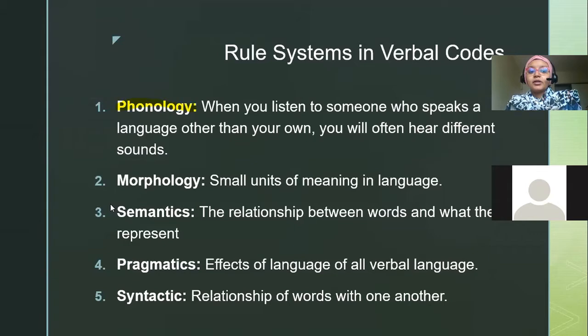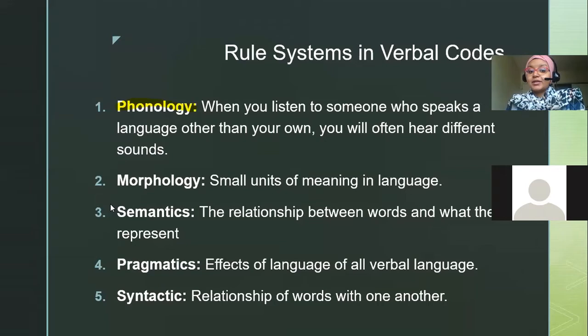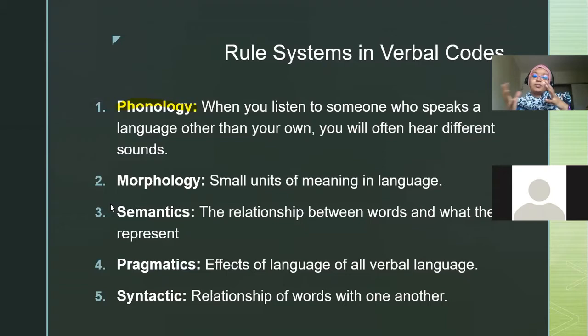Morphology is small units of meaning in language — things like 'of,' 'in,' 'but,' 'and,' 'or.' All these small units that connect sentences and make meaning are called morphology. Semantics is the relationship between words and what they represent — like, what does 'tree' represent to you? Semantics can even work with nonverbal language. A gesture could mean something to you and something completely different to me.